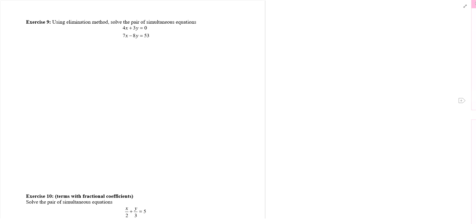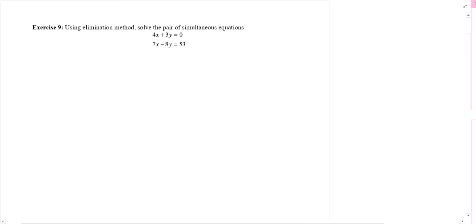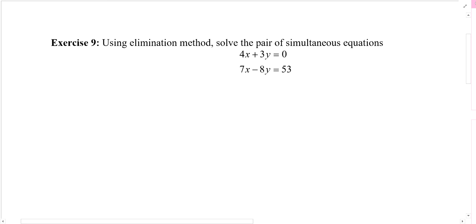Page seven. Okay, so sometimes we want you to use specific methods. In this question, they want you to use the elimination method to solve the pair of simultaneous equations. 4x plus 3y is 0, 7x minus 8y is 53. What's our first step?